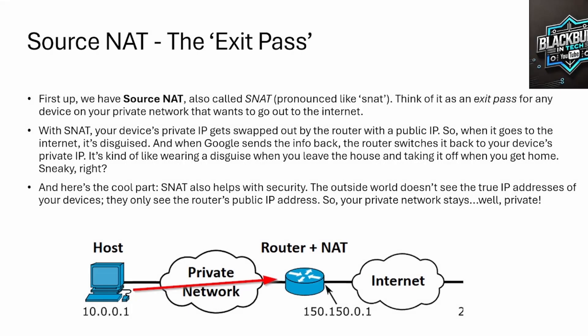So this is Source NAT. And this is the most common one that people think of when they think of Network Address Translation. I think of it as your exit pass. Essentially, I have this host here, and I want to get out to, say, youtube.com — so that way I could subscribe to Blackburn & Tech. I'm on this 10.network, which is a private address, so I'm going to send that packet over to my router.